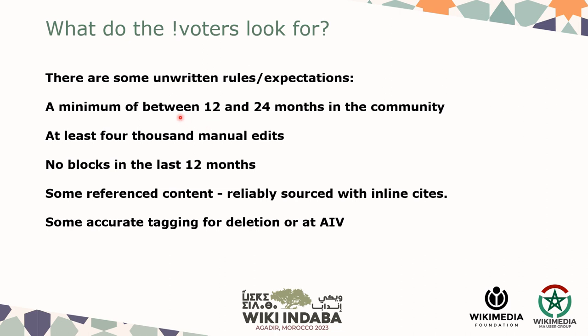What do the voters look for? There are some unwritten rules and expectations — it's not codified. A minimum of between 12 and 24 months in the community specifically on the English Wikipedia. At least 4,000 manual edits — some people expect even more. Automated edits are given less weight at RfA. No blocks in the last 12 months unless you have a really good explanation. You also need to have contributed some referenced content and show you understand what a reliable source is and how to do an inline citation.